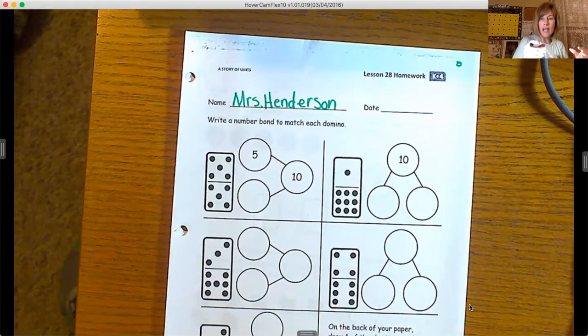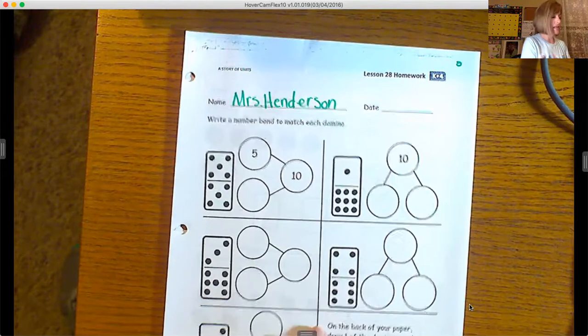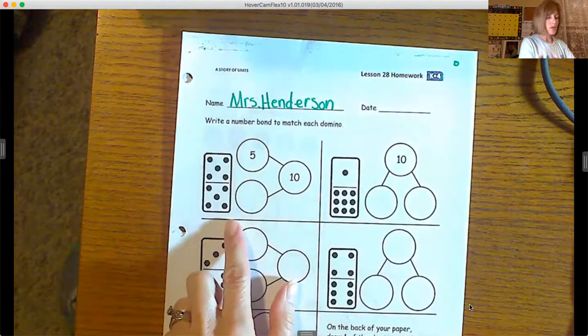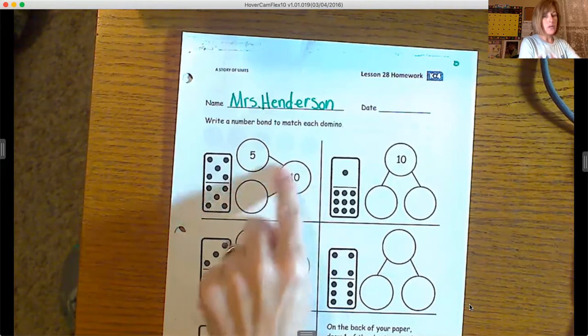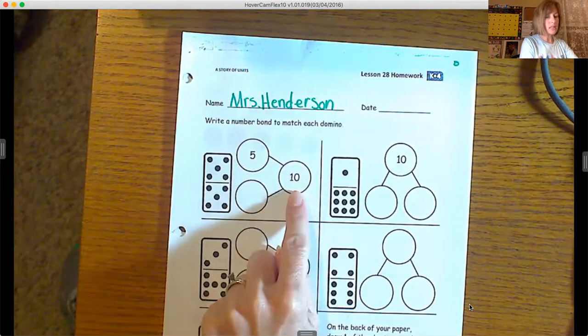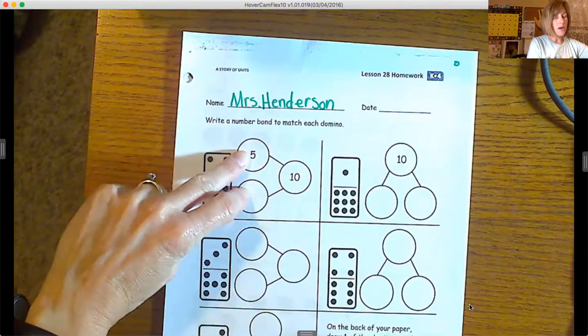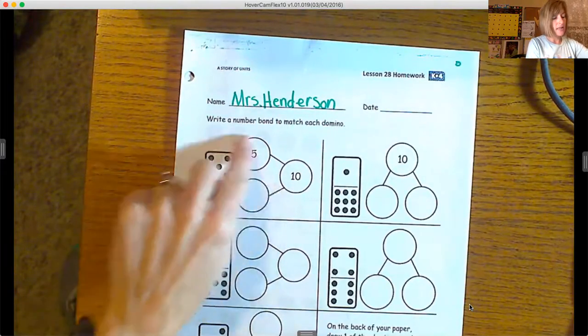So what we have to do—remember the whole number is here, and then these two are the parts, and they have paths that lead to the number bond. It's like a fact family.